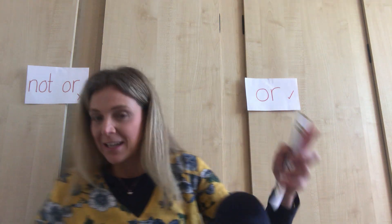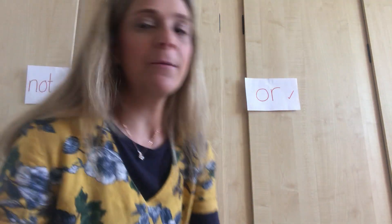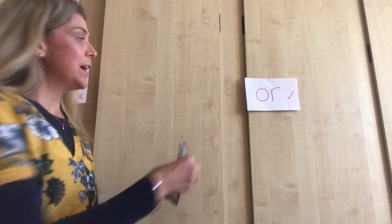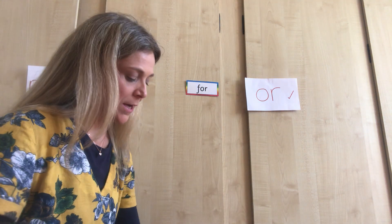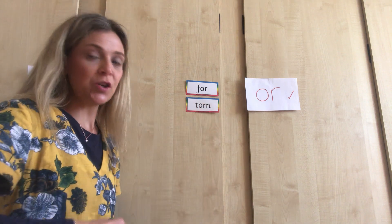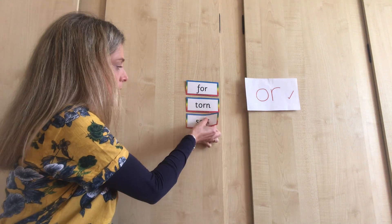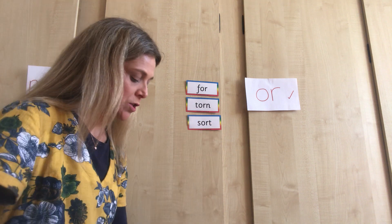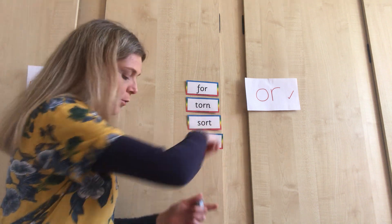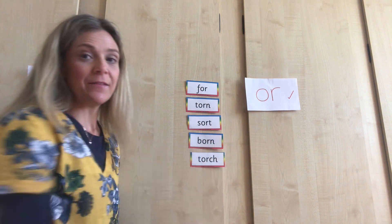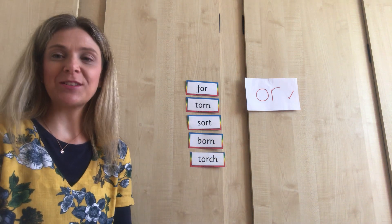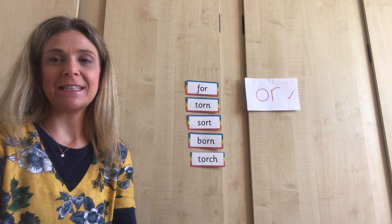Now here are some of our 'or' words. Let's have a little look — I'm going to pop them up on the board behind me, and then you can pause the video and write some sentences that have got the 'or' words in. So we've got: for, torn, sort, born, and taught. I'll leave those up there and then you can write some sentences with those words in.